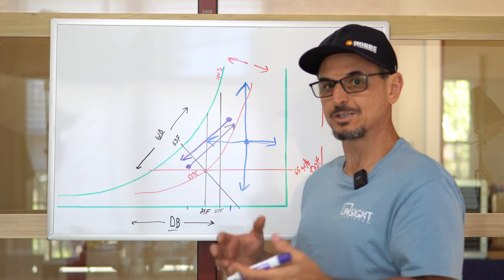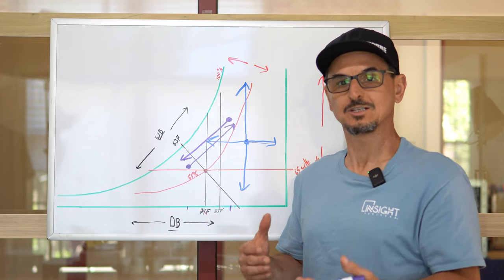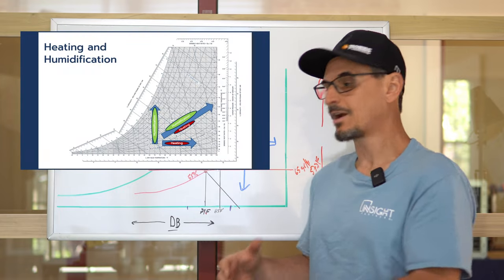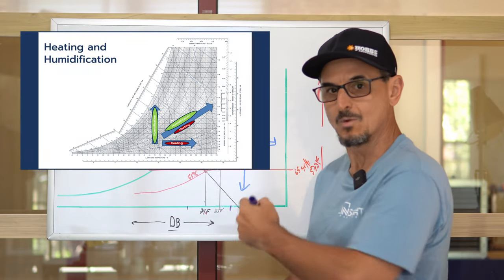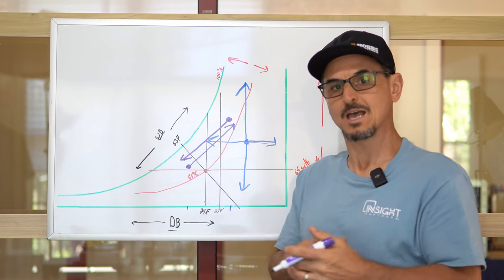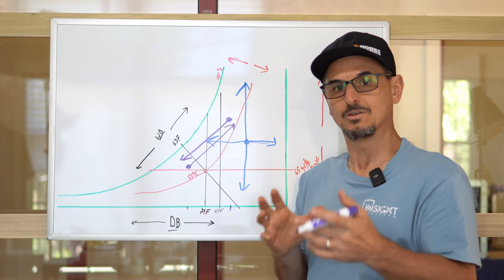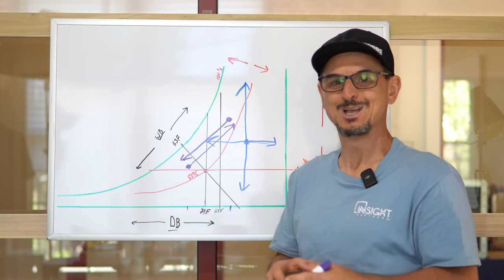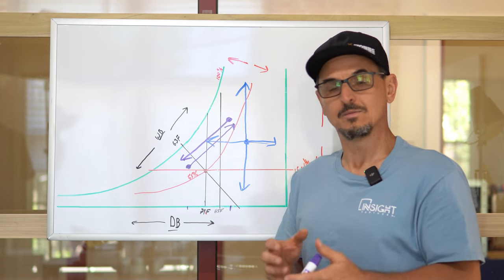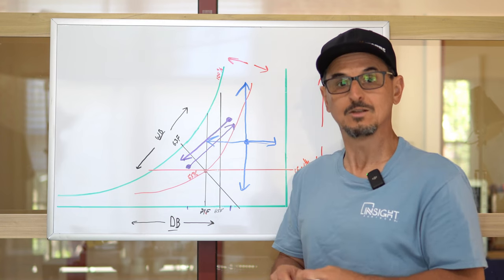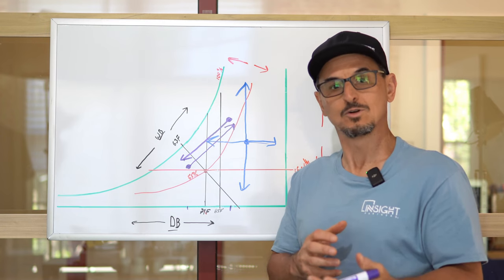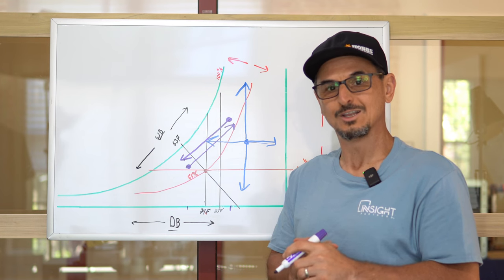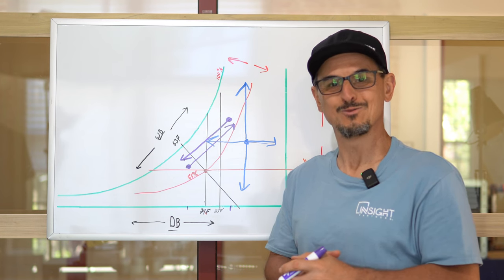I think that covers just about the basics of psychometrics. It seems really overwhelming, but if you break down this chart — start with the outline, the X and Y axis, and then the humidity lines — those are easy to grasp and we're all familiar with those terms. Just take it slow. Knowing the psychometric chart has helped me tremendously in my career, and I was fortunate to be given a foundation of it early on. Thanks so much for watching — we appreciate you.